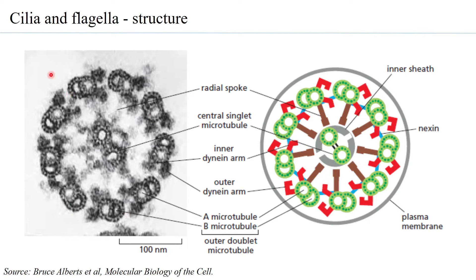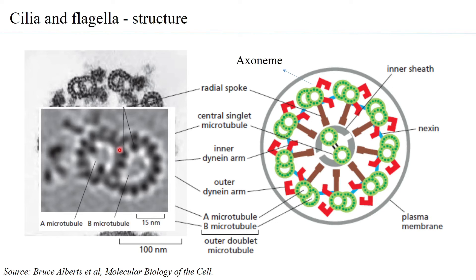An electron microscopic picture of a typical cilia or flagella cross-section shows nine doublet microtubules with a central pair of complete microtubules. At higher resolution, every doublet is made up of two microtubules: one complete microtubule made up of 13 protofilaments, and one incomplete microtubule made up of 11 protofilaments.